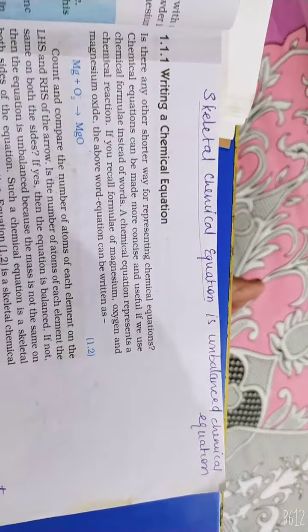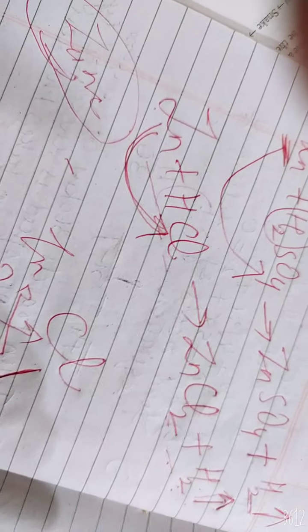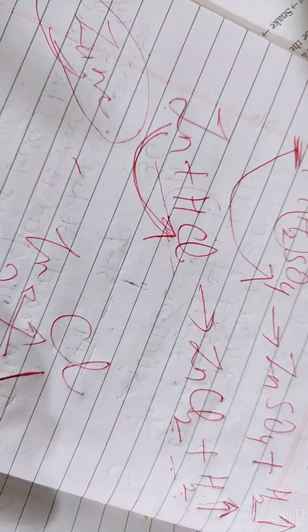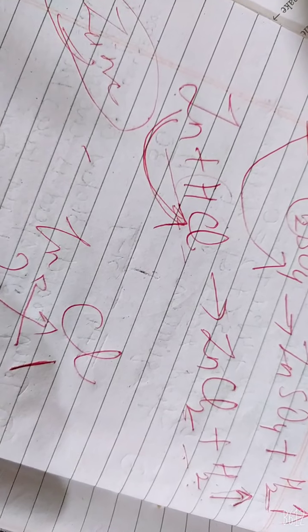After that, skeletal chemical equation is unbalanced. Now I have written this reaction. I don't know how 2 is coming from here. There is no logic. So this is a skeletal reaction. I have not balanced it.